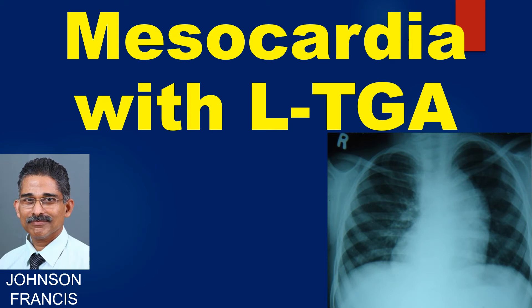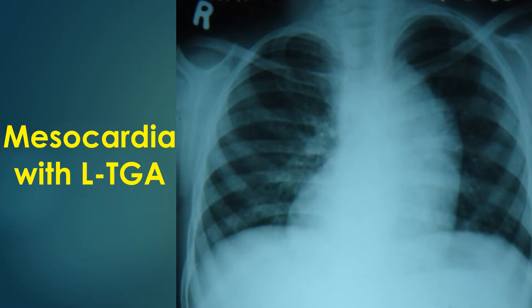This is a discussion on mesocardia with levotransposition of great arteries on chest X-ray. The X-ray chest PA view shows mesocardia with LTGA, and the L-post iota is seen as a bulge along the left upper border. The cardiac shadow is seen in the midline with almost equal spread to either side, suggesting mesocardia.